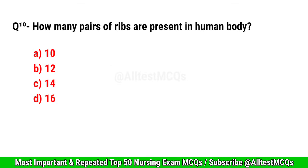Question No. 10. How many pairs of ribs are present in the human body? Correct option is B. 12.